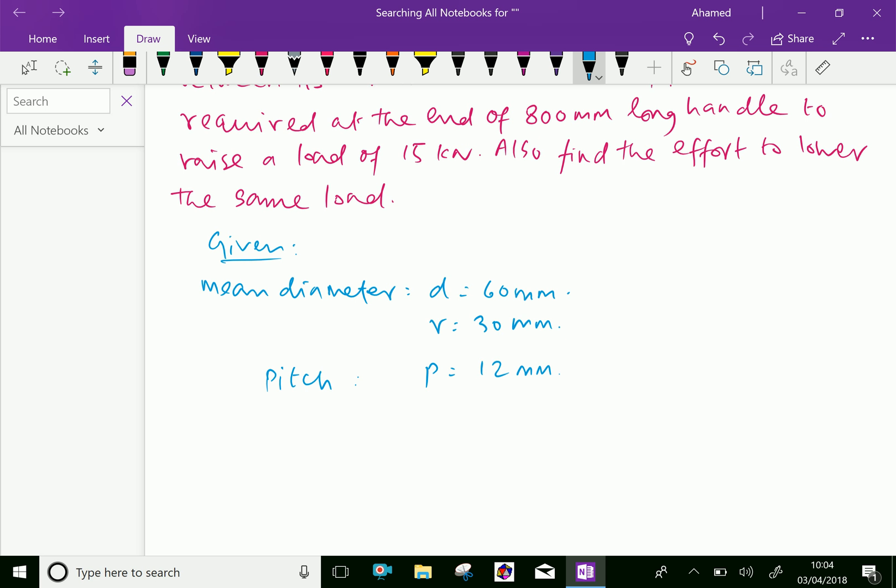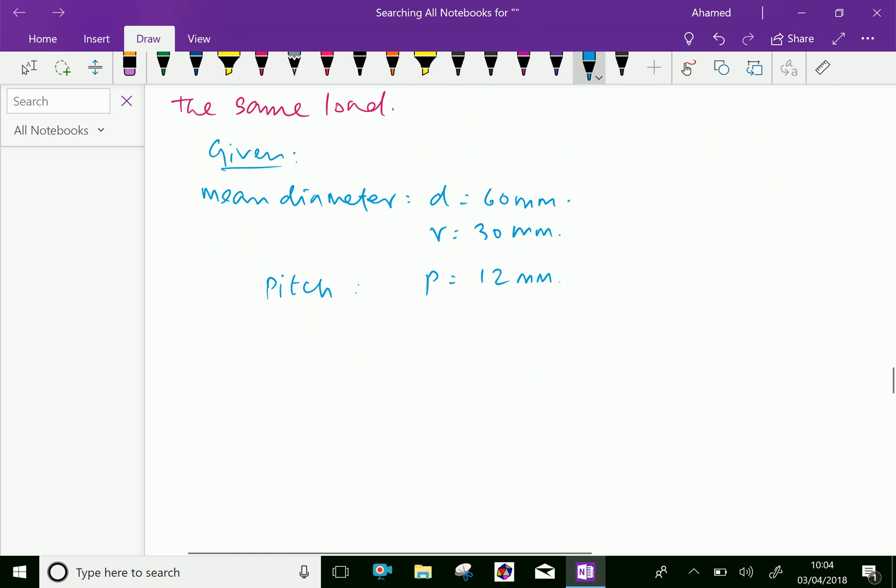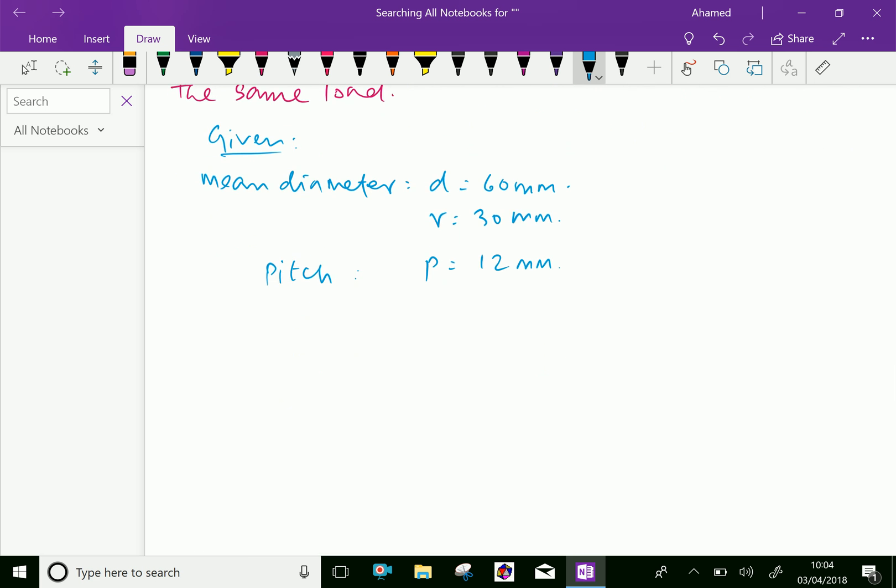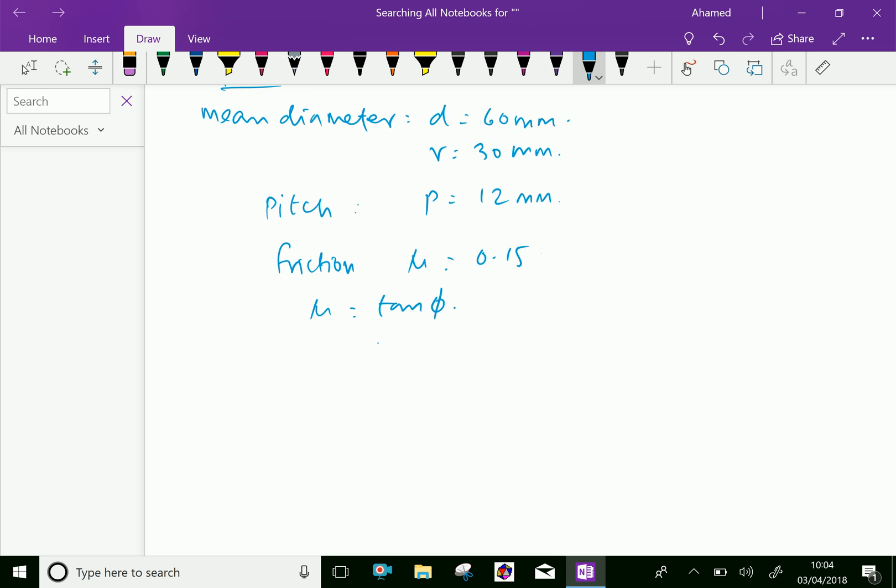Then, mu means coefficient of friction. Mu equals 0.15. Therefore, we know the relation mu equals tan phi. Therefore, the angle phi equals tan inverse of mu, that is 0.15, which gives 8.5 degrees.